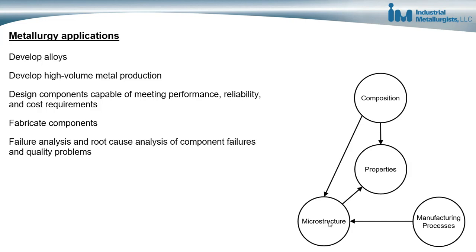We are also able to fabricate components that have the required properties. And by understanding the relationship between composition, microstructure, manufacturing processes, and properties, we can perform failure analysis and root cause analysis when there are component failures or quality problems — understanding what analyses are needed, what happened metallurgically, and what went wrong. We can only do all of these things by understanding the metallurgy of the specific metals we're working with.